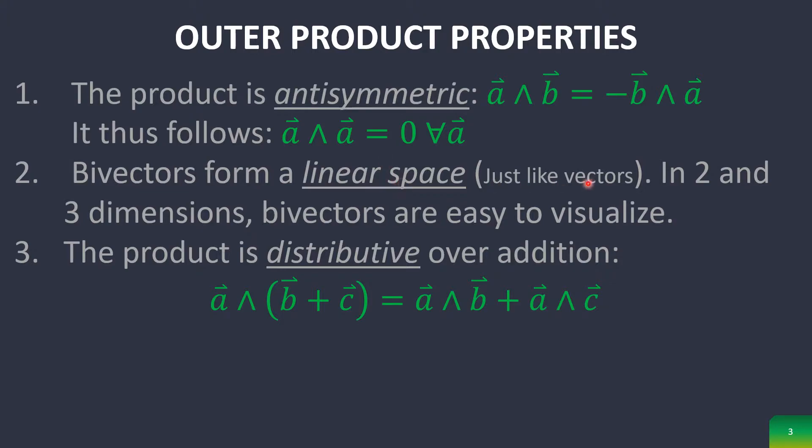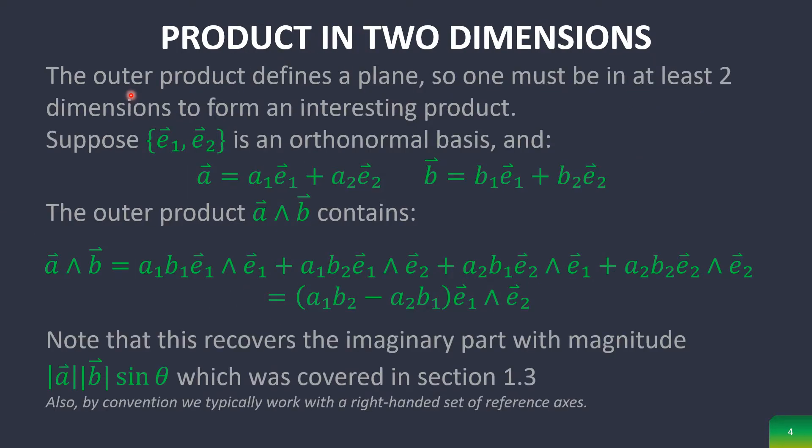They form a linear space, just like vectors do. And so you can use this linear space in the same way that you would normally use vectors. And in two and three dimensions, bivectors are very easy to visualize. And even in dimensions beyond that, you can still think of them as a plane. The product is distributive over addition. The outer product, while it defines a plane,